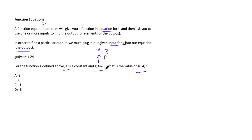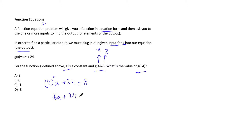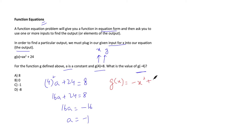Let's replace the values and see what we get. When I replace x with 4, I get 4² · a + 24, which gives an output of 8. So: 16a + 24 = 8, which gives 16a = −16, therefore a = −1. My equation becomes g(x) = −x² + 24.